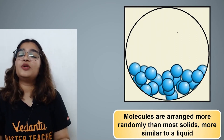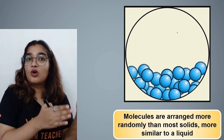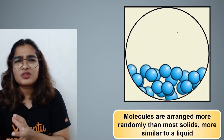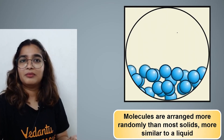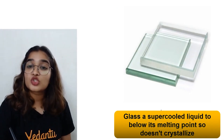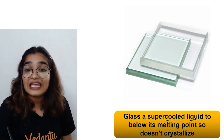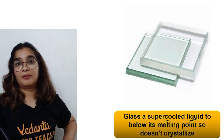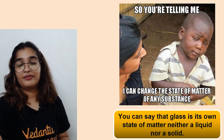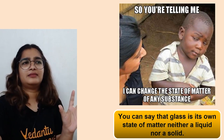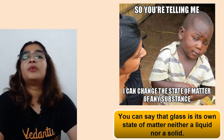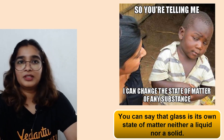So the molecules in glass are arranged more randomly than in most solids — more similar to a liquid. In solids the arrangement is regular, in liquids it is random. Glass is therefore a supercooled liquid — cooled below its melting point without crystallizing. It sits somewhere between solid and liquid.